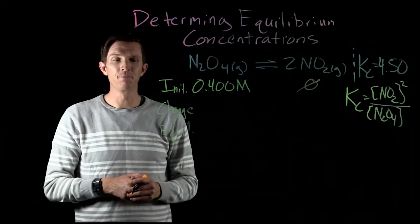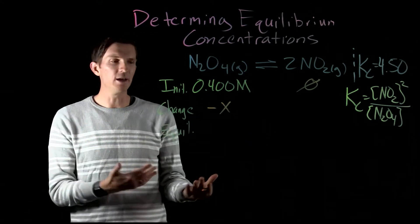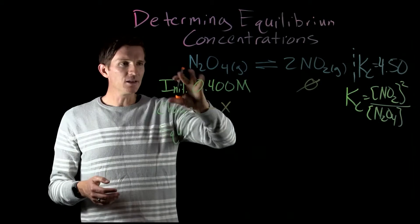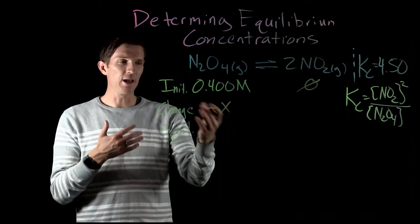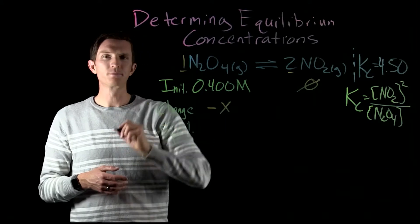So then what we can do is, well, let's identify our change as X, right, so it's going to decrease by some amount. As N2O4 decreases by X, NO2 based upon the coefficients 2 to 1 is going to increase by 2X, right, increase by twice that much.